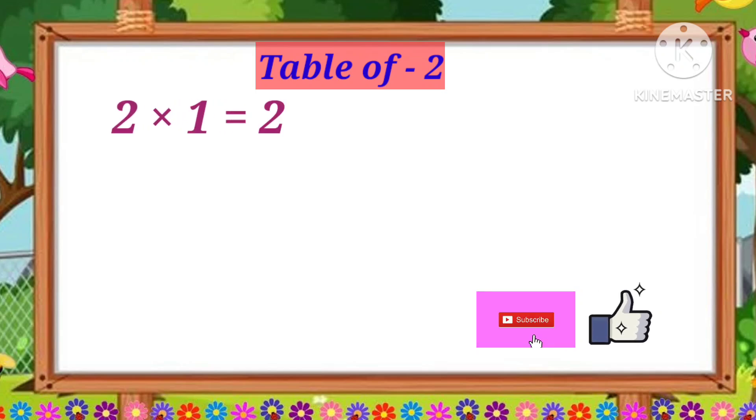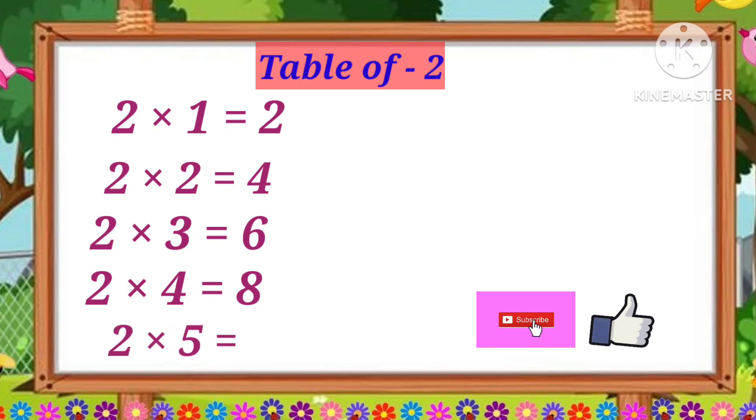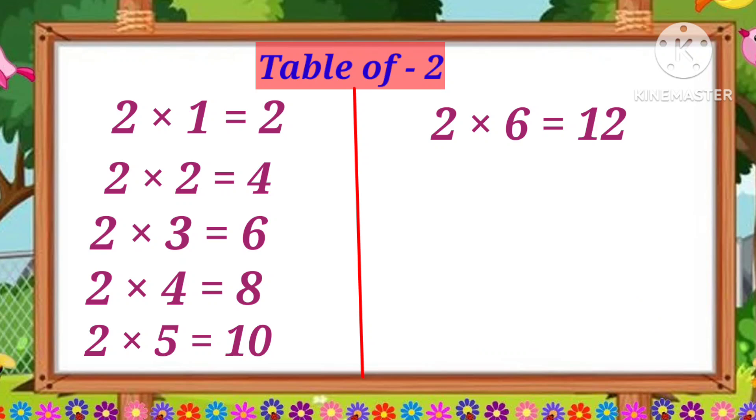Two ones are two. Two ones are two. Two twos are four. Two twos are four. Two threes are six. Two threes are six. Two sixes are twelve.